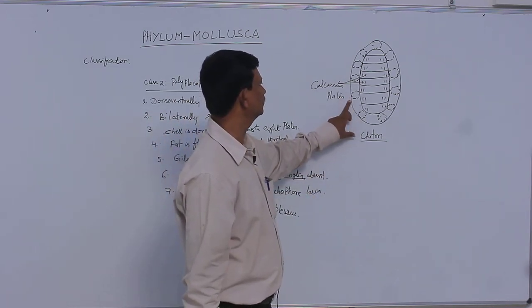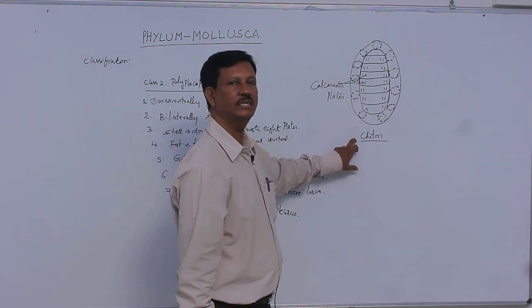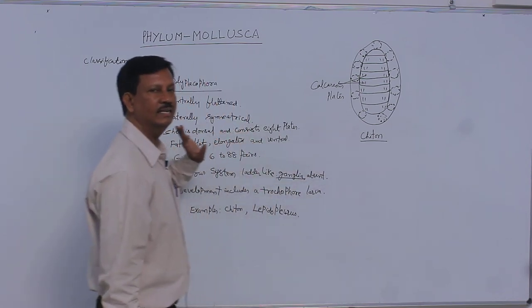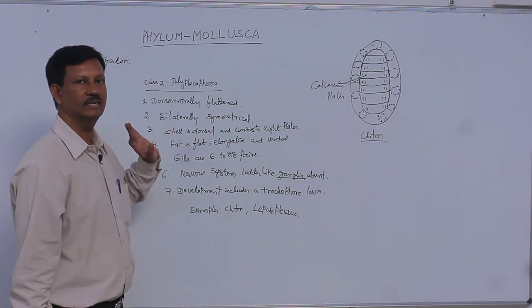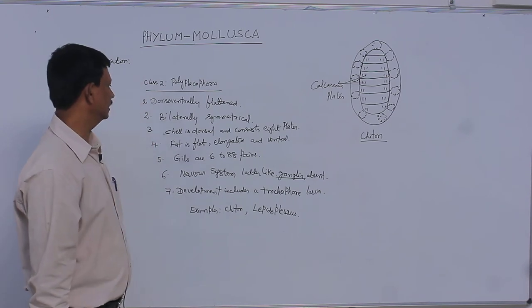This is the diagram of the chiton. The important character of this class is the shell is divided into many plates. Generally 8 plates are present.